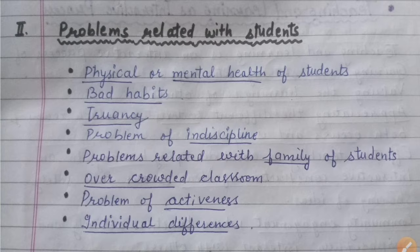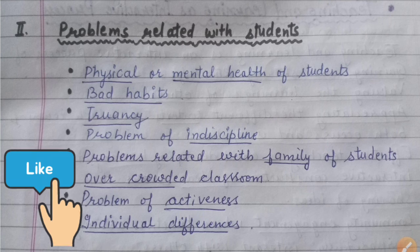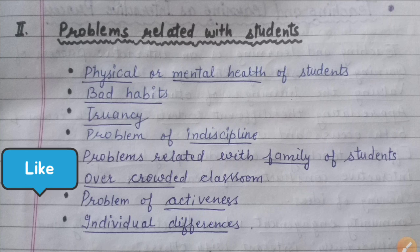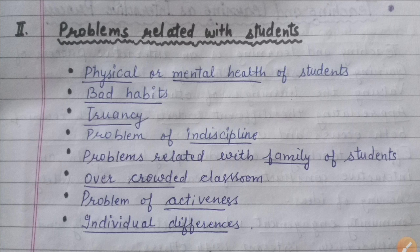Now we will see problems related to students. The first point is physical and mental health of students. If children's physical health is not good — they are ill — or if they have mental and emotional issues, then they will not be able to study. This creates a problem in the learning process.